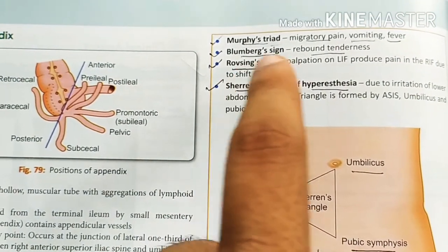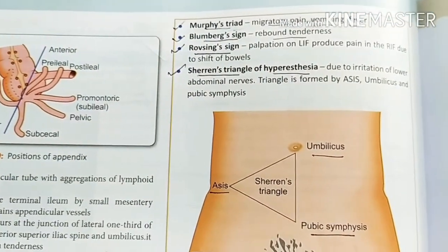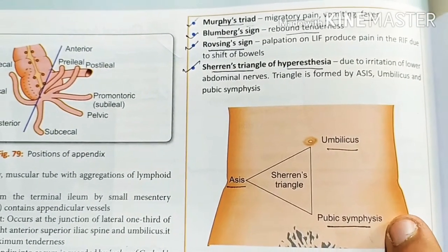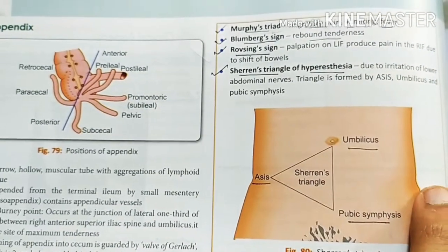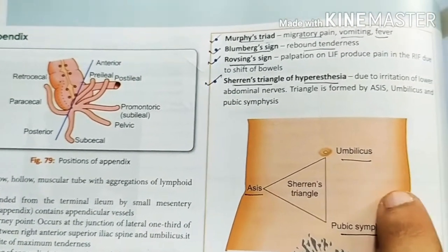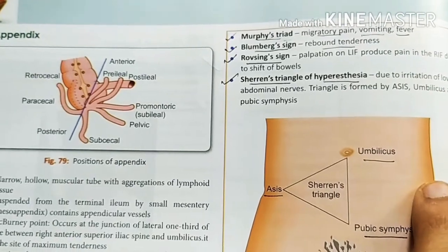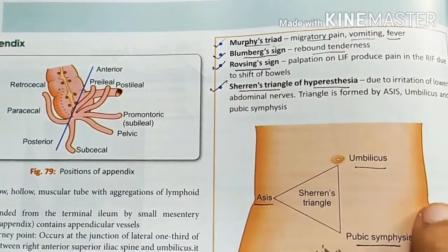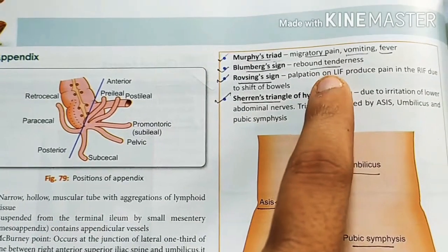Next is Rovsing sign. This is very interesting. You press on the left iliac fossa, but you feel pain on the right iliac fossa. Why? Because as you press on the left, the bowel moves, and since you have appendicitis, you get pain on the right. That is Rovsing sign — pressing on the LIF but getting pain on the RIF.